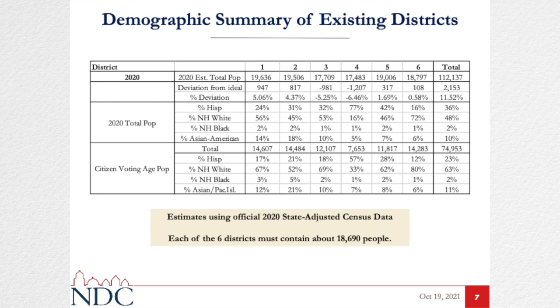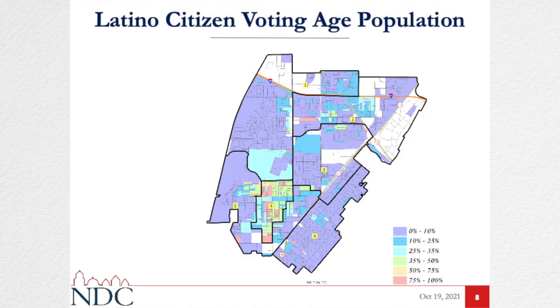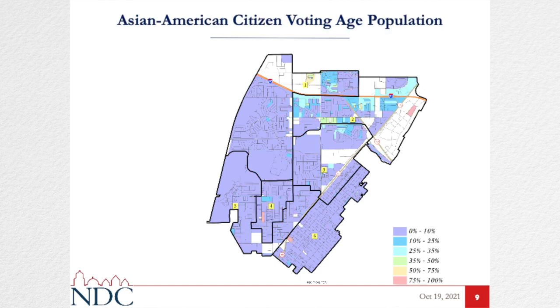Some of these districts will have to adjust their population in order to become population balanced. Looking at the Voting Rights Act analysis, there is one majority Latino district. We're looking at citizen voting age population — the population over 18 with U.S. citizenship — which courts call the eligible voter count. While the Voting Rights Act doesn't guarantee an election, it does guarantee an opportunity to elect if you can draw a majority district. We have a 57% Latino district in District 4.